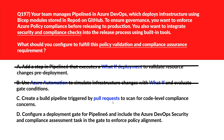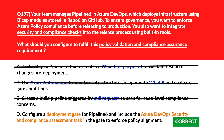Option C: creating a build pipeline triggered by pull request — pull request assessments validate code structure or syntax early, not policy compliance tied to runtime deployments. Option D: configure a deployment gate and include the Azure DevOps Security and Compliance Assessment task. Adding this task to the deployment gate enables pre-production validation of infrastructure changes against organizational policy definitions. Option D is the right answer.